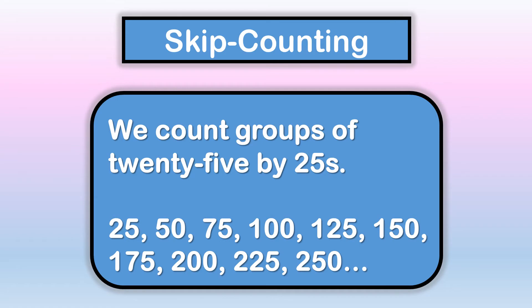We count groups of twenty-five by twenty-fives: twenty-five, fifty, seventy-five, one hundred, one hundred twenty-five, one hundred fifty, one hundred seventy-five, two hundred, two hundred twenty-five, two hundred fifty.